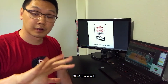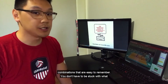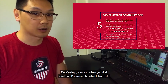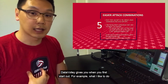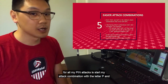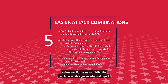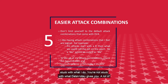Tip 5: use attack combinations that are easy to remember. You don't have to be stuck with what DataVolley gives you when you first start out. For example, what I like to do for all my pin attacks is start my attack combination with the letter P, and subsequently the second letter of the combination designates what set type it is. So if it's a go, it's a PG. Feel free to come up with your own — you're not stuck with what I do or what DataVolley gives you. A lot of people use a lot of different attack combinations.